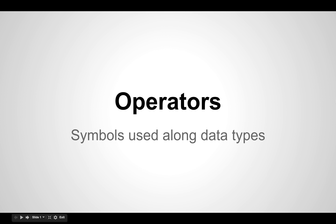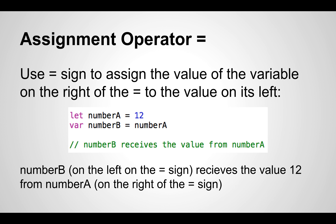Operators are symbols used along data types. The simplest one is the equal sign, called the assignment operator. It assigns the value of the variable on the right to the variable on the left. For example, let numberA equal 12, so numberA stores the value 12. Then var numberB equals numberA, so numberB is now also equal to 12. The variable on the left receives the value on the right of the equal sign.